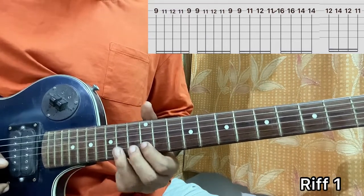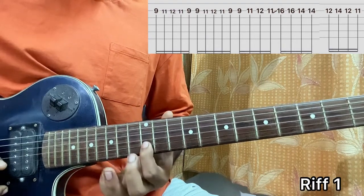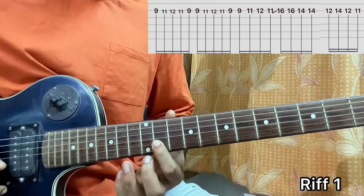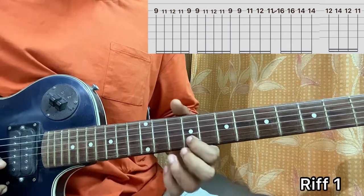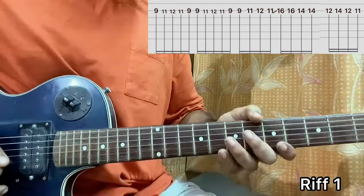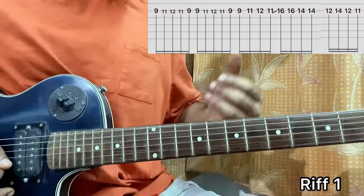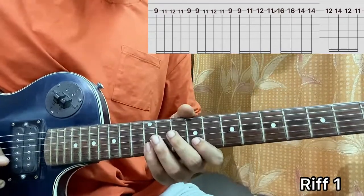Then, I'll play 14. So, 12, 14, 12, then 11, then 9. So, I hope the riff is clear. You can see the tab. Now, let's play together. One, two, three, four.